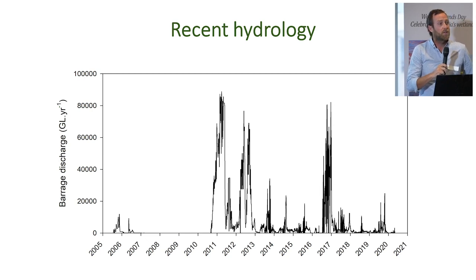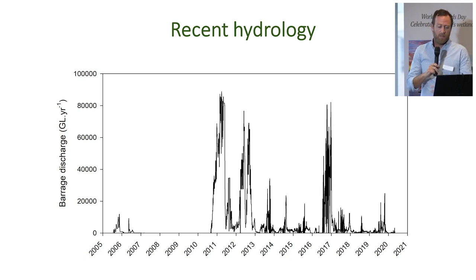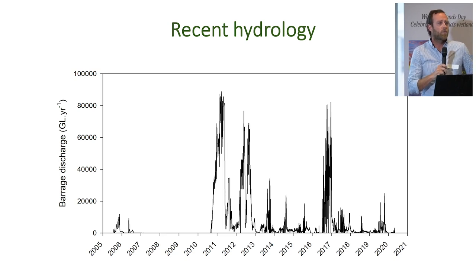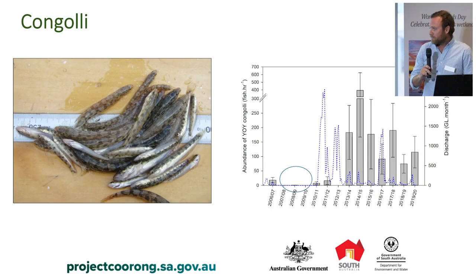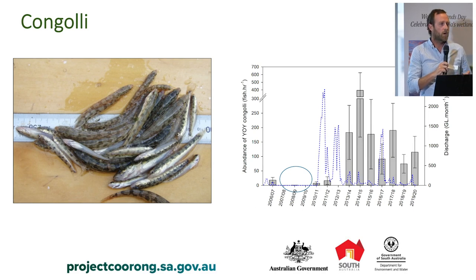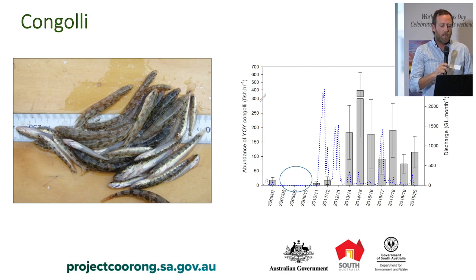The hydrology experienced over our time down here has been highly variable. This plot shows discharge cumulatively across the barrages - notably we've got the period of the Millennium Drought from 2007 to 2010 when there was no water discharged, a few floods, but almost as importantly there's the period from about 2013 through to 2020 when environmental water really comprised a substantial proportion of flow. This plot represents the mean annual abundance of upstream migrating juvenile congoli across the barrage network from 2006 through to now, and the most notable feature is the period 2006 to 2010.